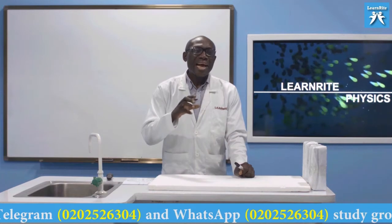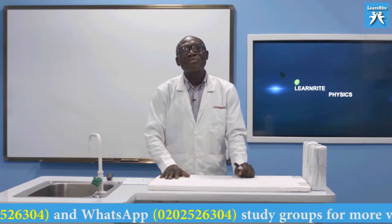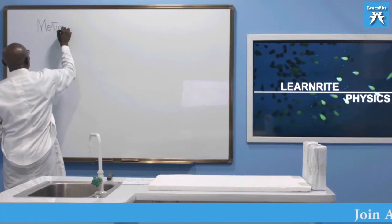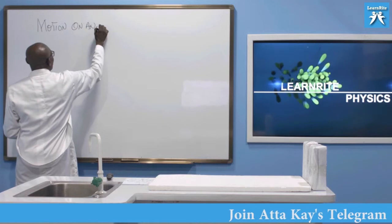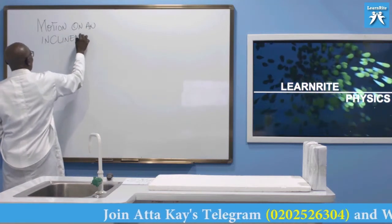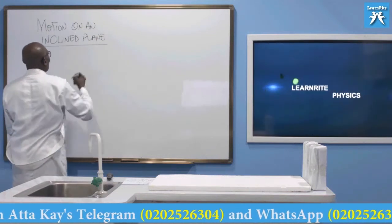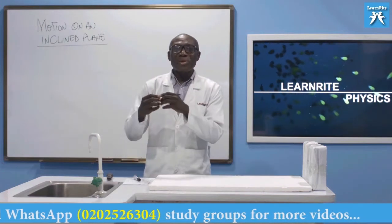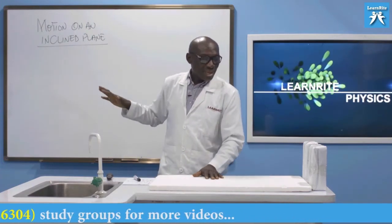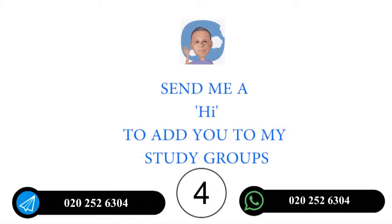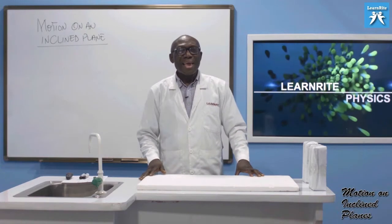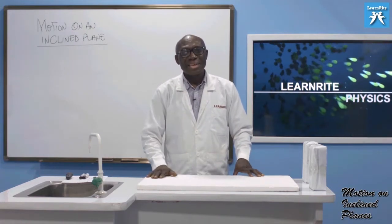We are coming to look at the last aspect of motion under gravity, and that is motion on an inclined plane. So what is a plane? You must first of all understand these things before we can proceed to treat this topic in detail. A plane is basically a flat surface.